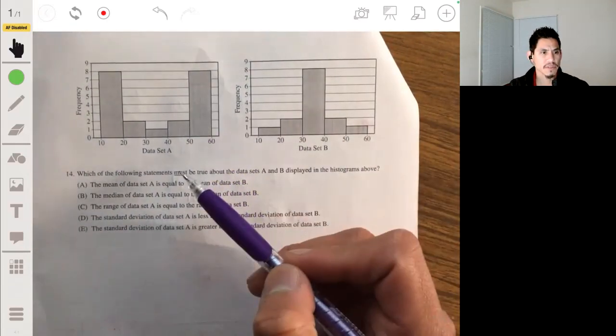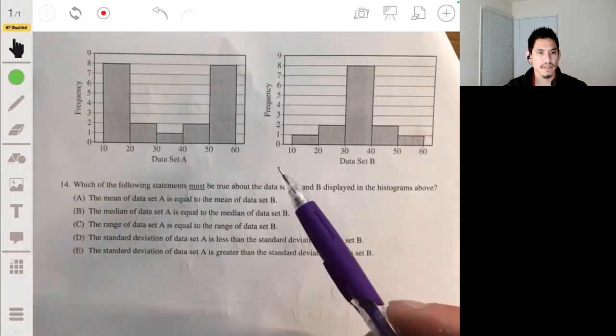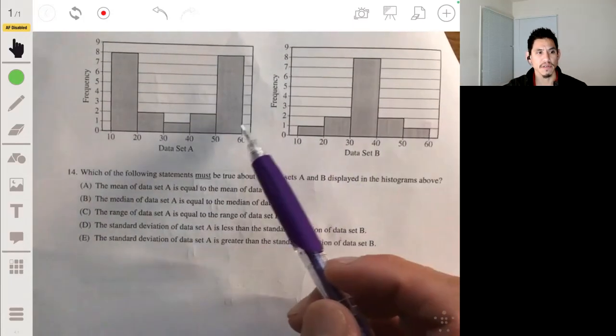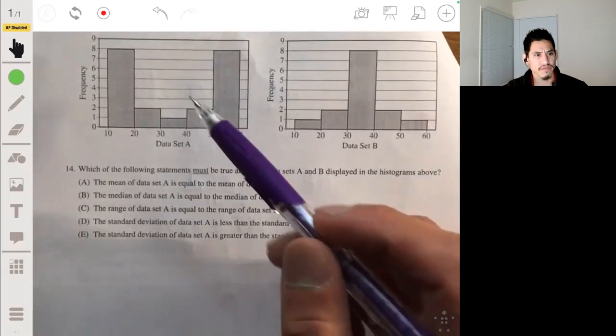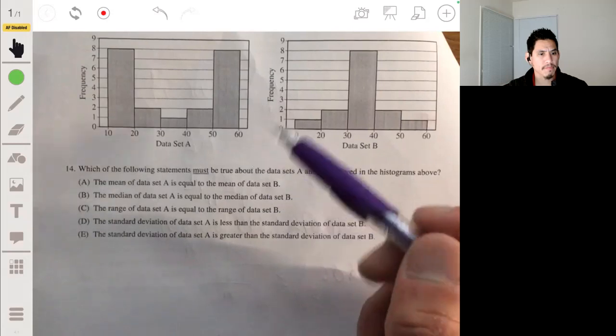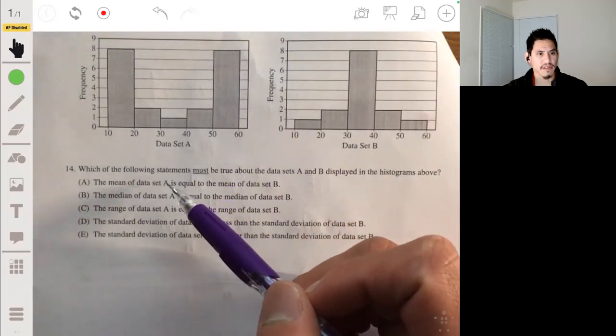All right, 14. Which of the following statements must be true about the data sets A and B displayed in the histograms above? Okay. So these are interesting. So, looks like we're looking at measures of center and spread.